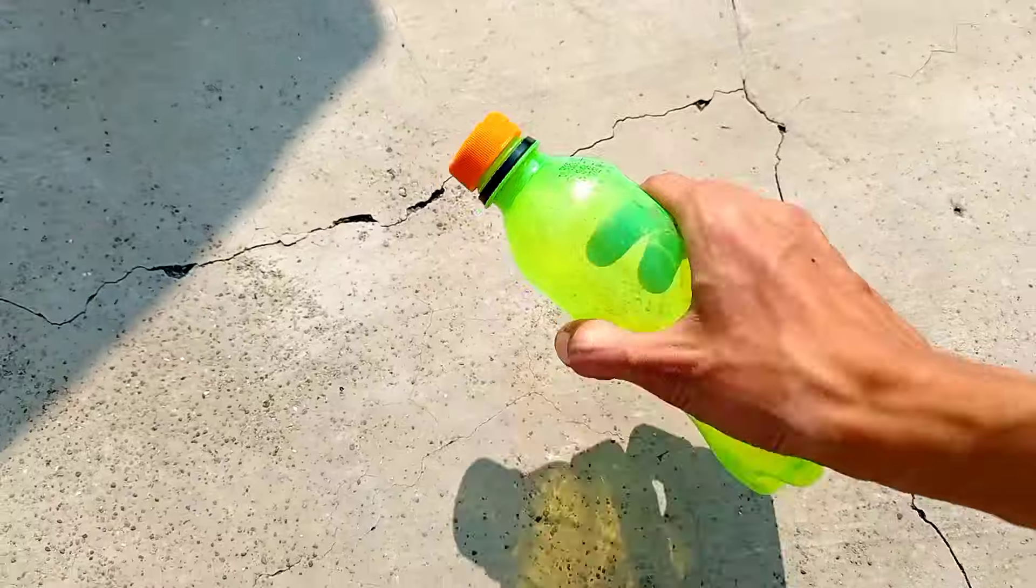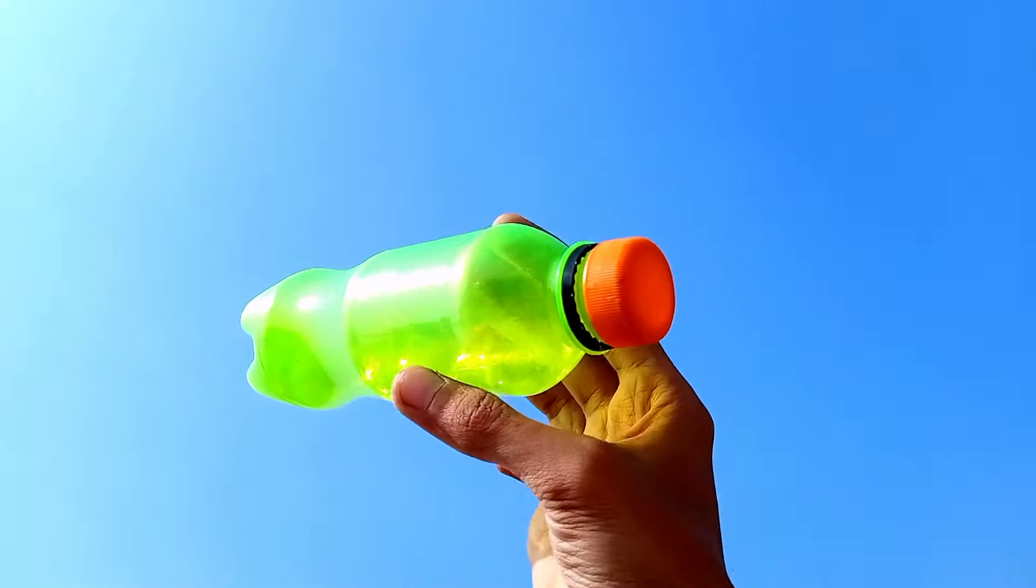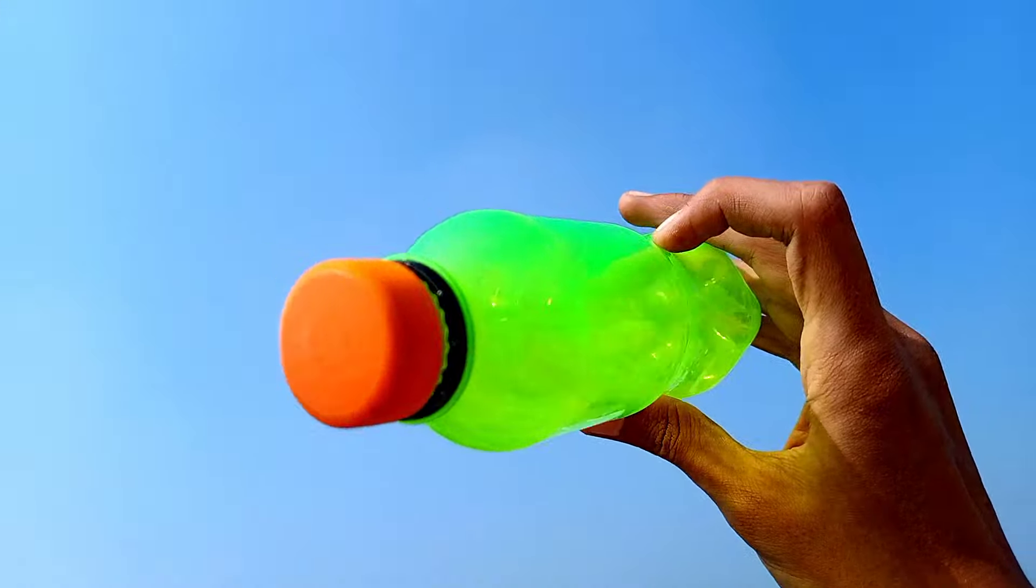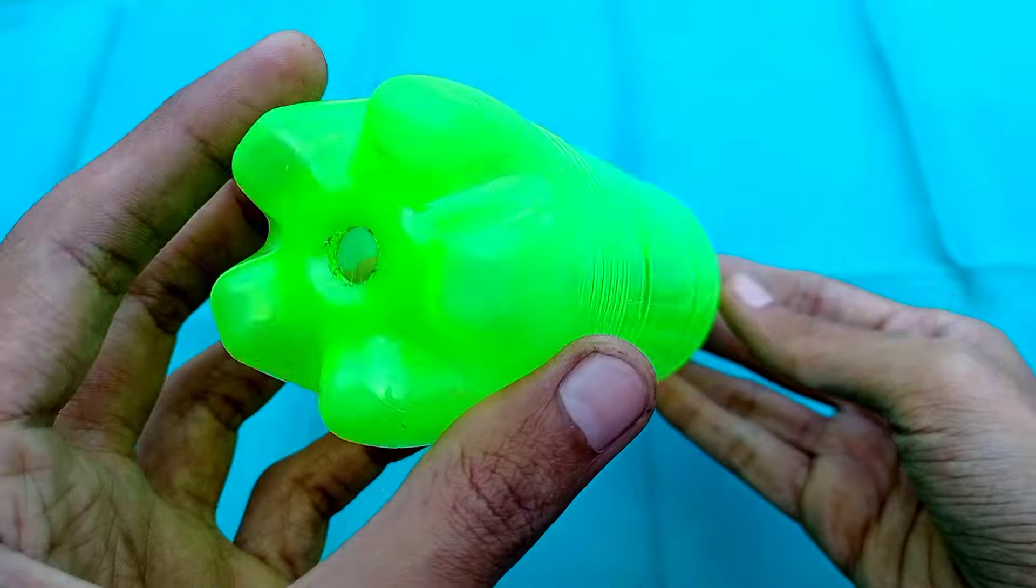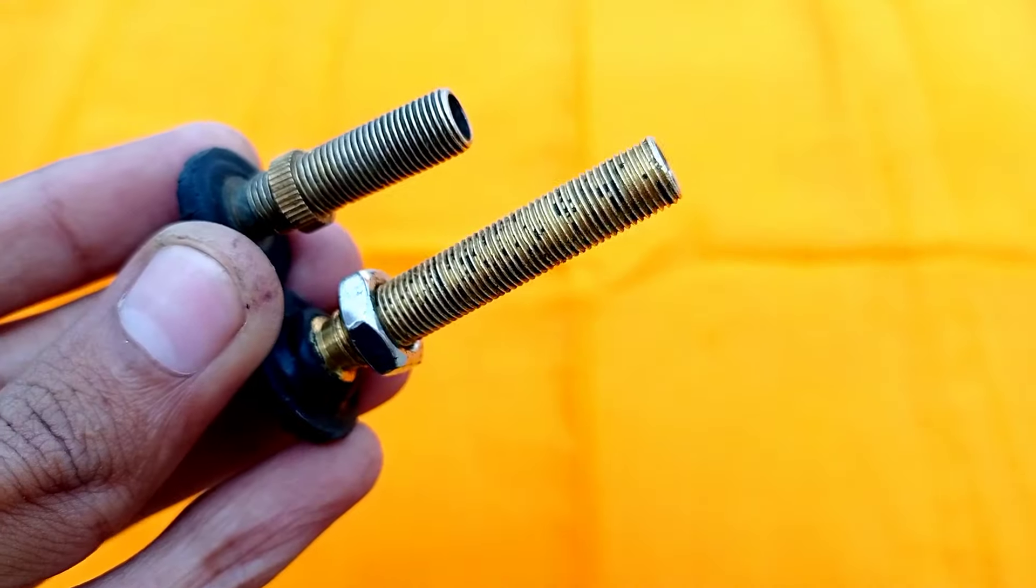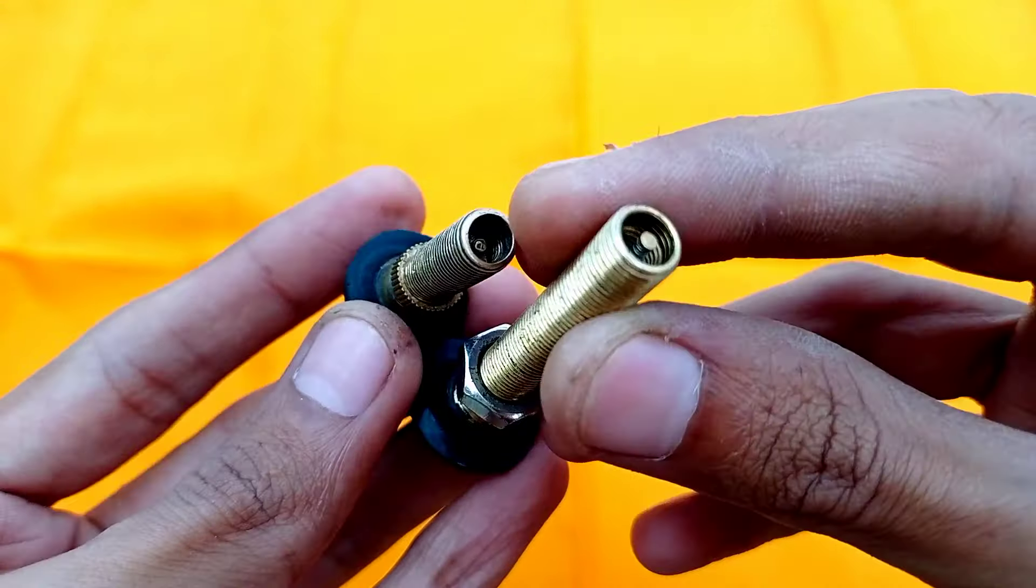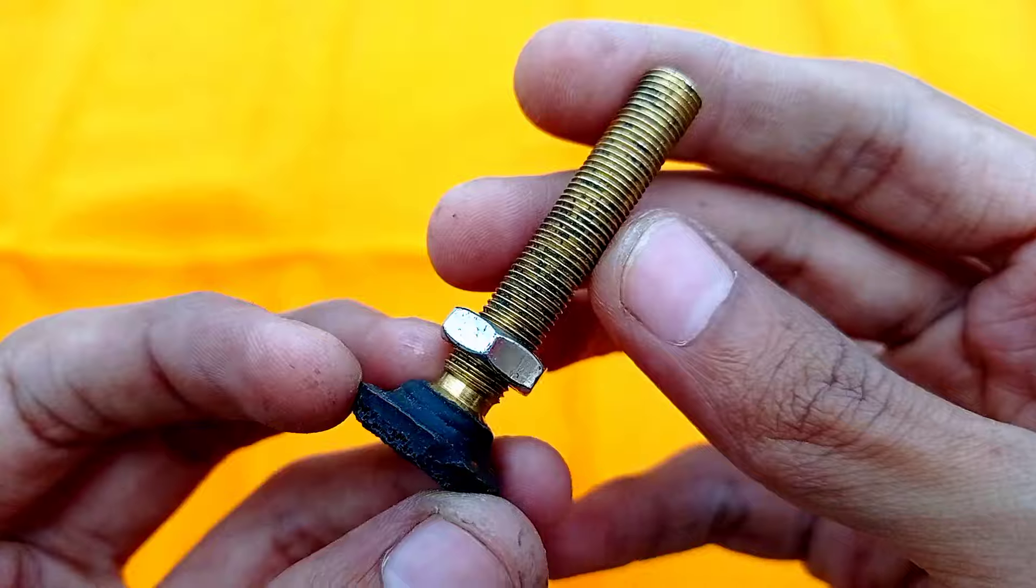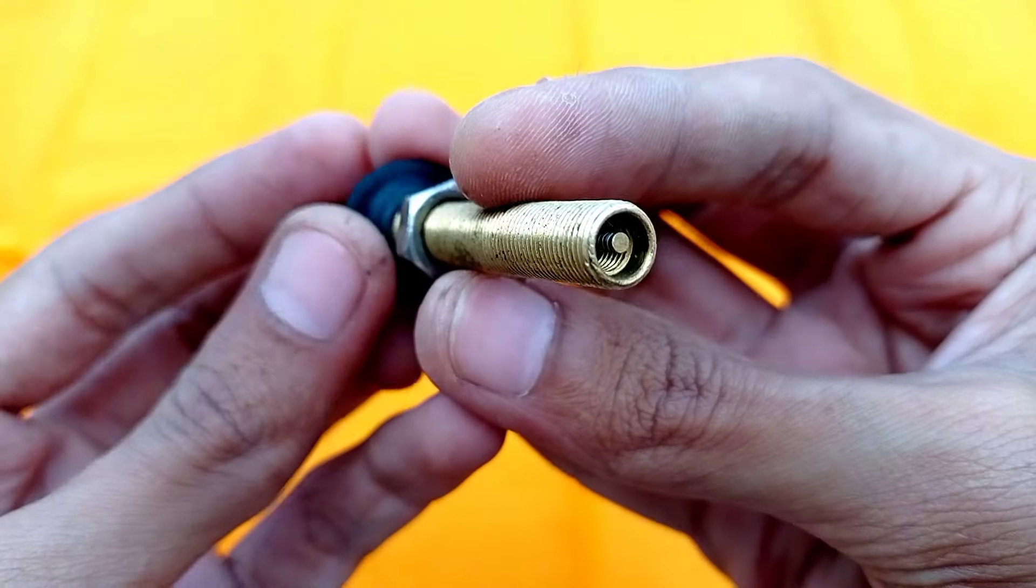First of all, I found this plastic cold drink bottle which I used as a storage tank. To fill this bottle with compressed air, I used this bicycle valve and you can also use a bike valve. It is a type of one-way valve which only passes air through one side.